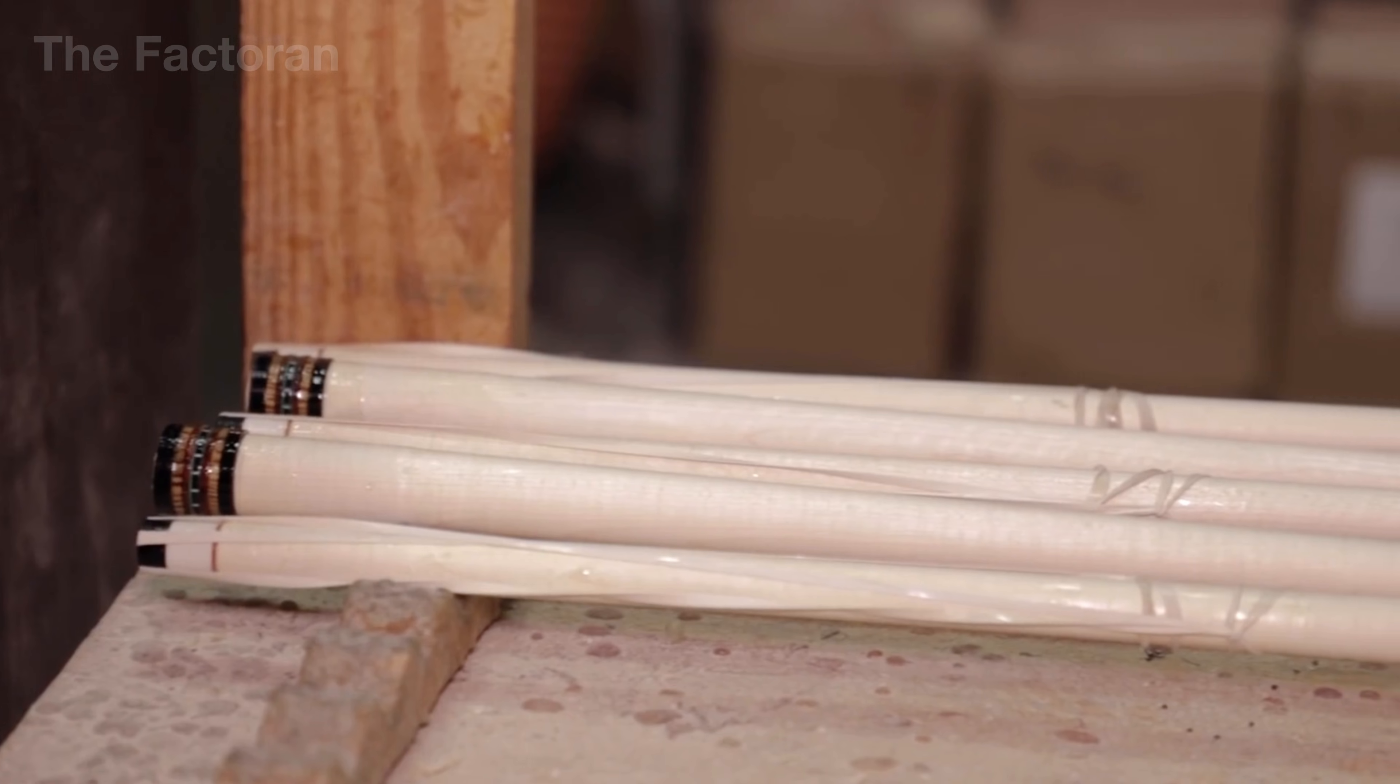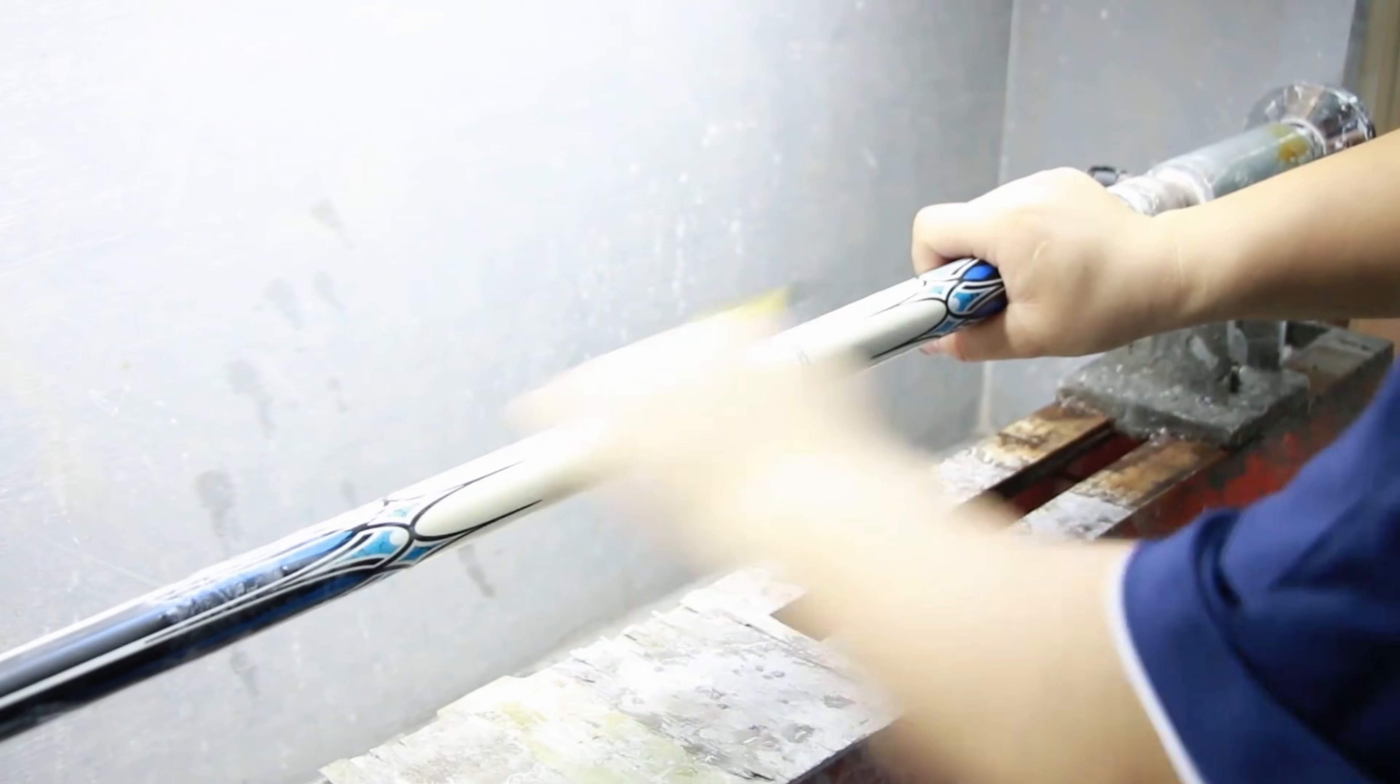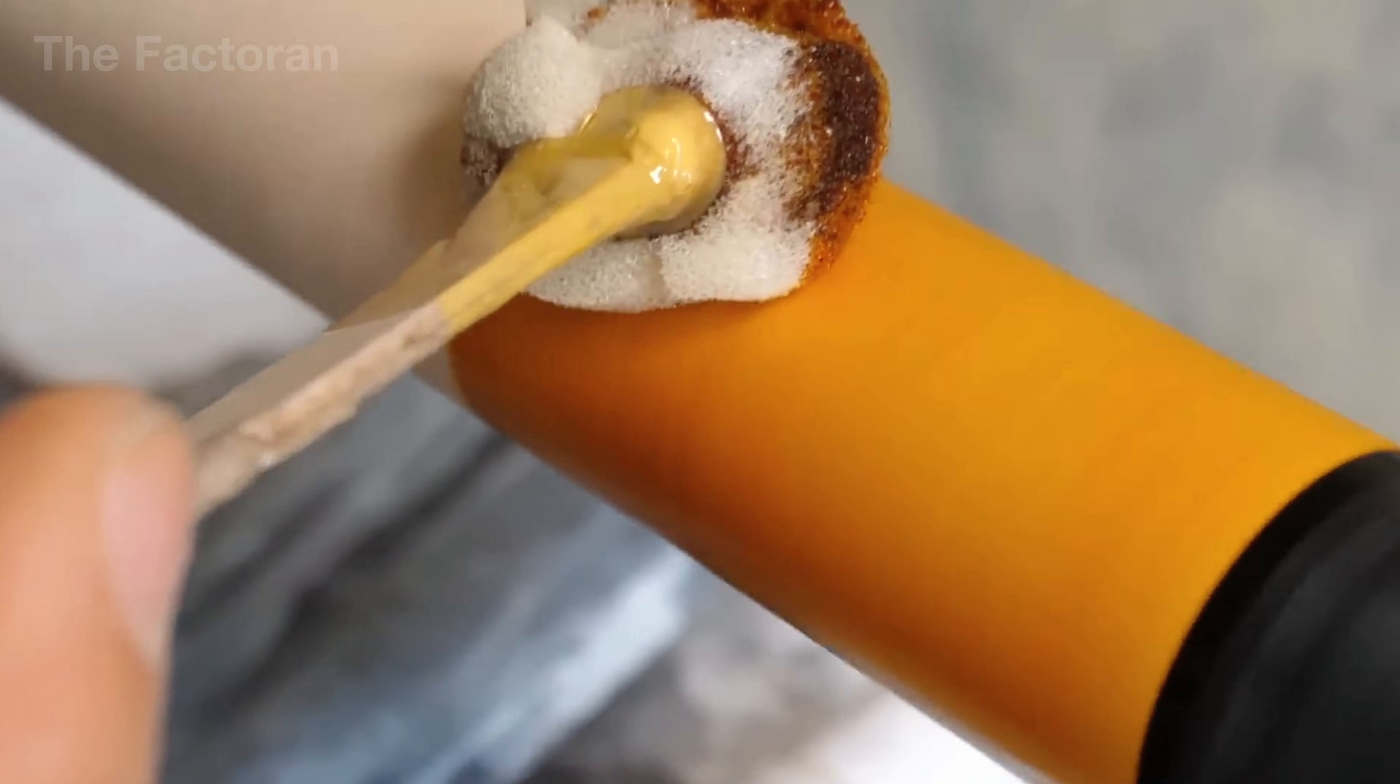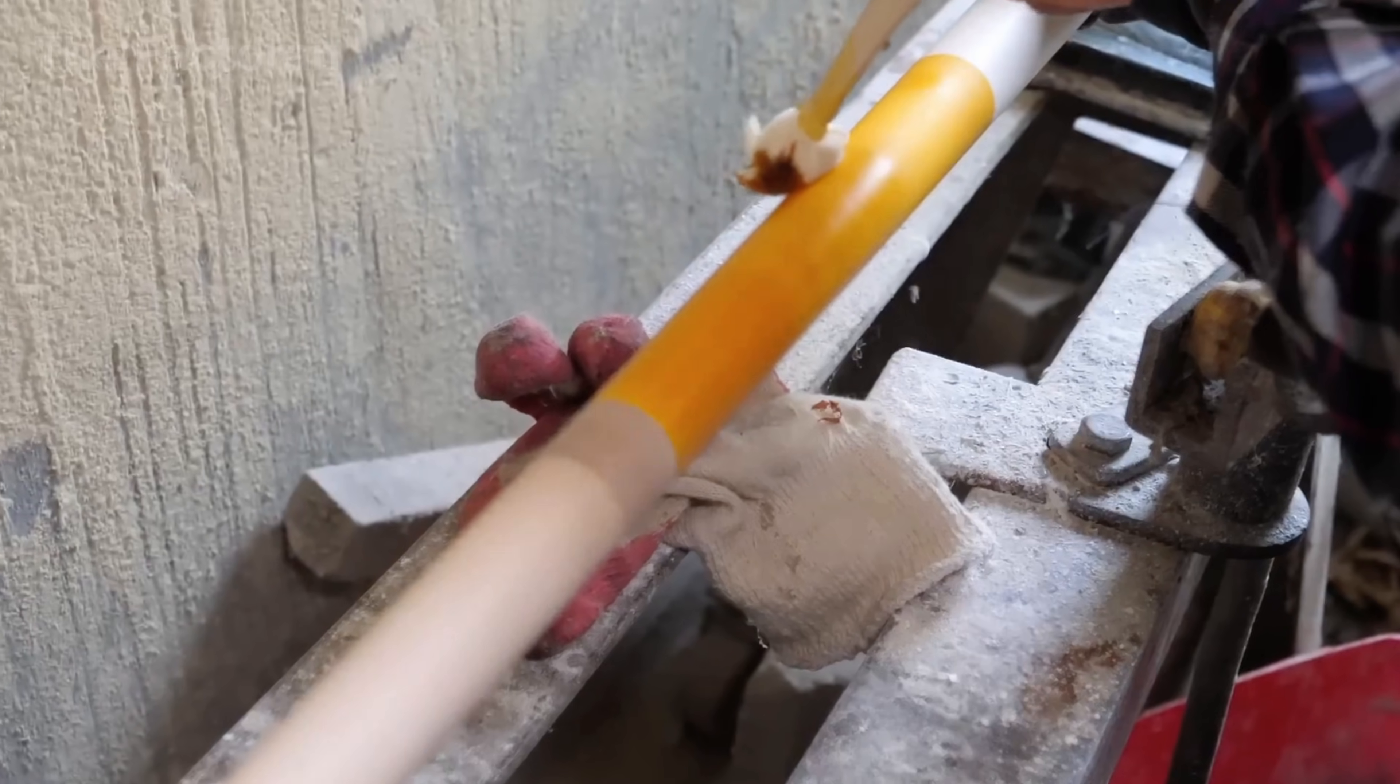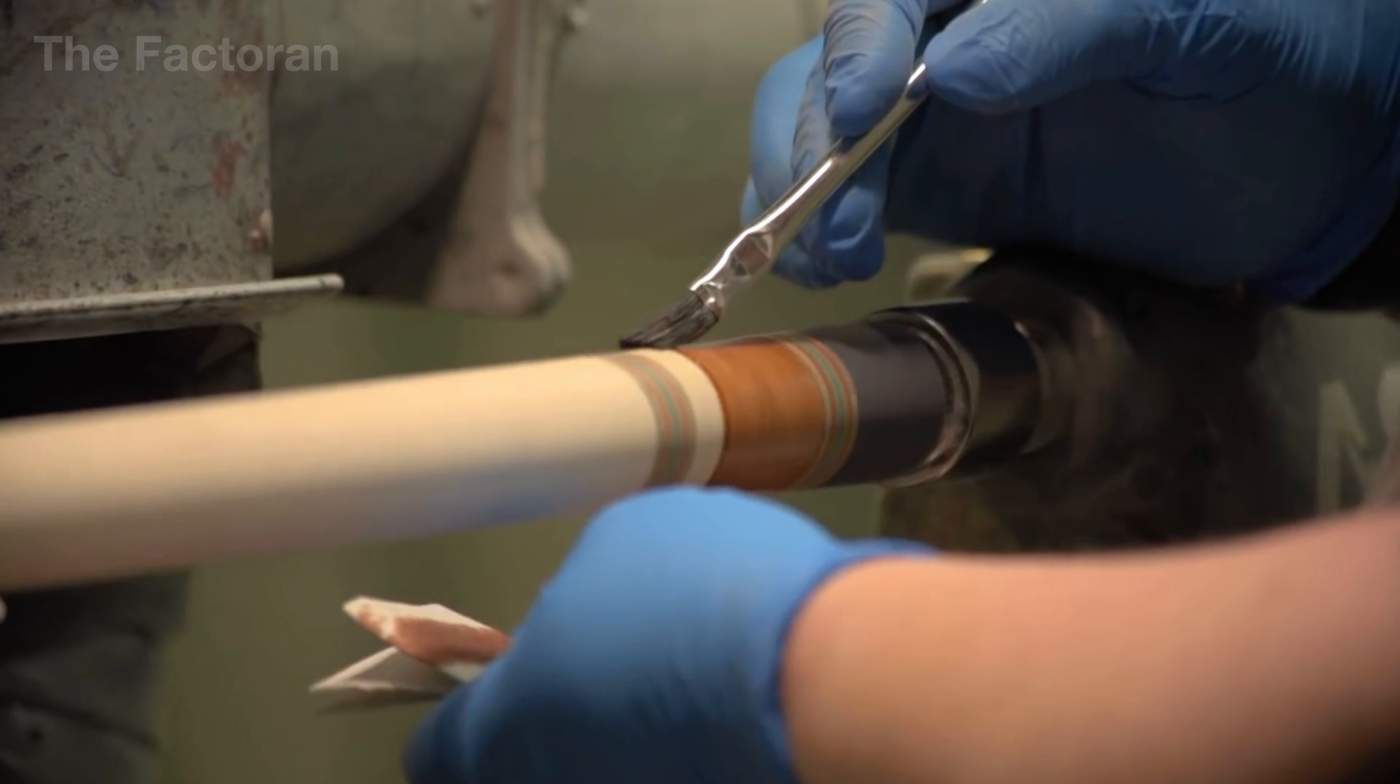Once all mechanical parts are secured and the surface is fully cleaned, the cue enters the finishing stage. The process begins with hand staining, where craftsmen use cloths and soft brushes to work color deep into the wood, bringing out the natural grain while preserving its depth and character. Next, the cue moves into an electrostatic spray booth, where multiple layers of automotive grade polyurethane are applied.